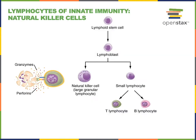Natural killer cells are a type of lymphocyte involved in innate immunity. In contrast to the T lymphocytes and B lymphocytes that are involved in adaptive immunity to specific infections, natural killer cells defend against viral infection, but not specific viral infections.